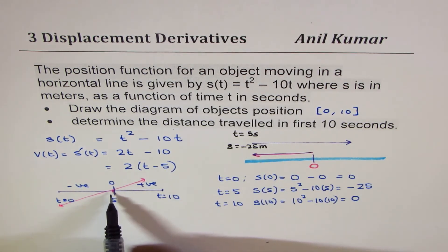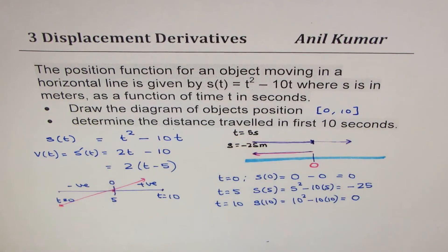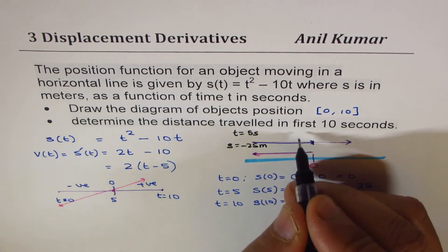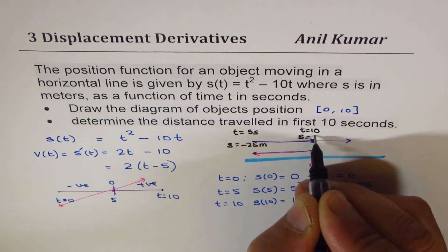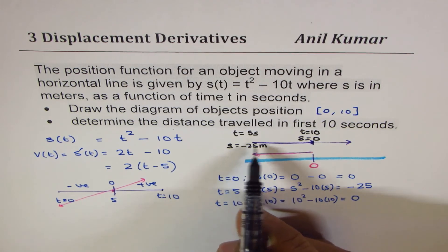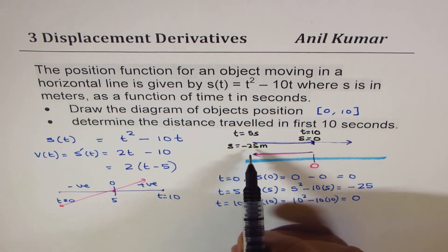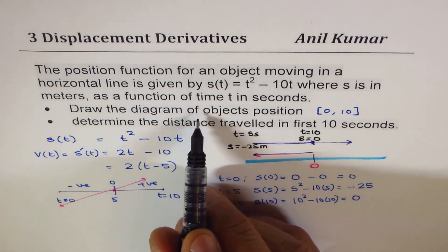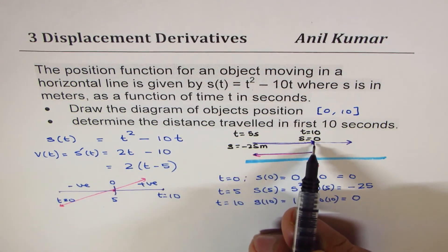After that, the velocity becomes positive, and the object moves right, and it moves up to this point only in first 10 seconds. Continue, but in 10 seconds it comes to that point, which is at t equals 10, s is equal to 0. That means it comes back by 25 meters. So that becomes your diagram for the displacement of the object or the position diagram in the first 10 seconds.